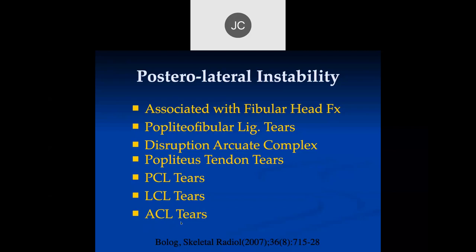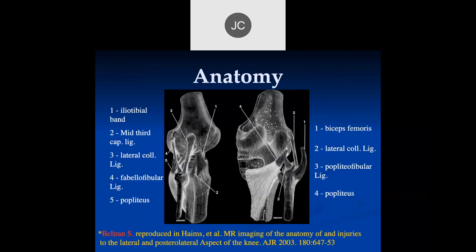When we see posterolateral corner instability associated with ACL tears, it means that if you're going to fix the ACL tear, you'll also have to fix the posterolateral corner instability — it significantly changes the surgical approach. So it's important whenever you look at acute ACL tears that you also evaluate for posterolateral corner instability. Also, there's almost always something else besides one structure injured — you cannot isolate just one structure. You have to think about the meniscus, the capsule, or something else.